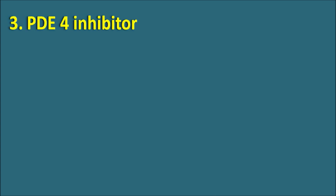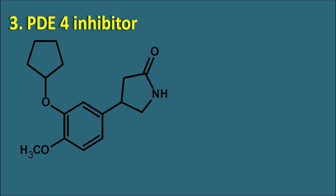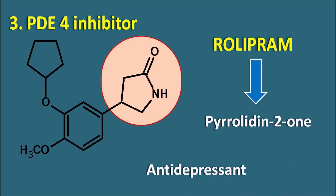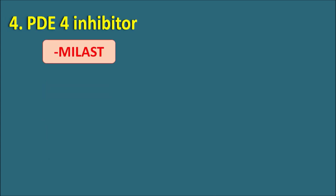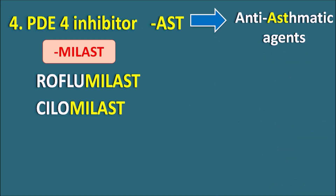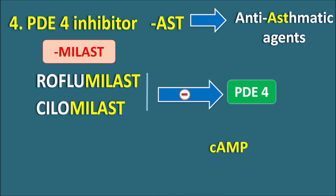Next are the drugs acting on phosphodiesterase type 4 — PDE4 inhibitors. One drug is rolipram, which has a pyrrolidine-2-one ring system and acts as an antidepressant. Other phosphodiesterase type 4 inhibitors have the suffix 'melast,' such as roflumilast and cilomilast. The suffix stem 'ast' indicates they are anti-asthmatic agents — whenever a drug has the suffix 'ast,' it indicates it is an anti-asthmatic or anti-allergic agent. So roflumilast and cilomilast are anti-asthmatic agents.